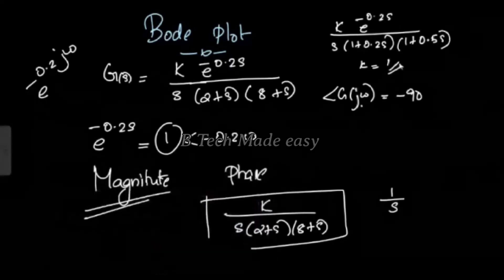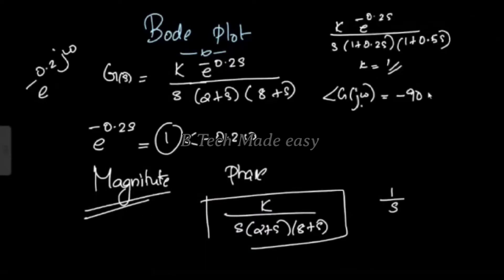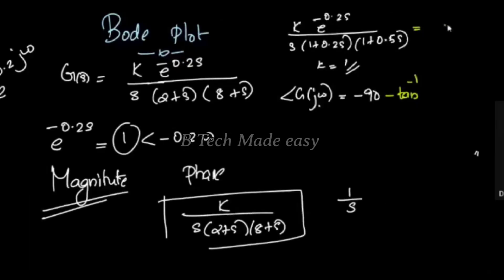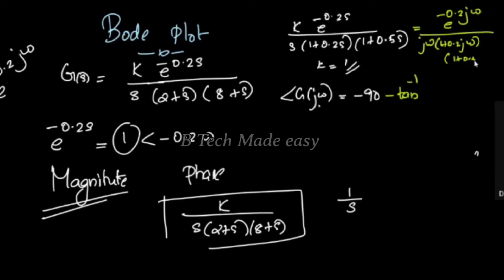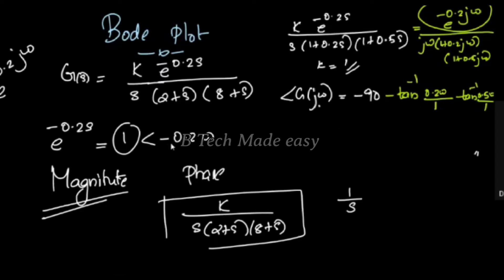The angle of 1/(jω) is −90°. For 1/(1 + 0.2jω), the angle is −tan⁻¹(0.2ω). For 1/(1 + 0.5jω), the angle is −tan⁻¹(0.5ω). The total phase is the sum of all these terms plus the delay angle −0.2ω radians.